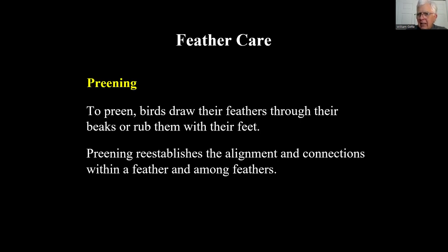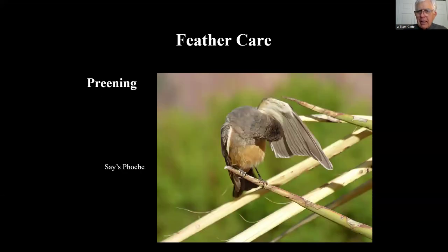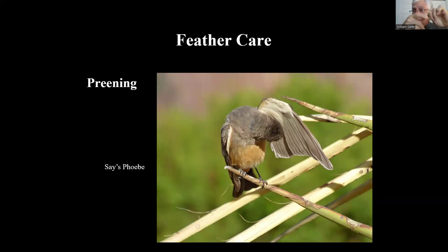Feather care by preening: this great catbird is using its bill to go through its feathers, removing dirt and parasites, and taking off the old sheath of new feathers as they form — like laundering and brushing clothes. Here's a Say's phoebe looking under its wing for parasites, spending a lot of time lifting its wing and preening underneath to align feathers. Remember those hooklets in the feather structure? If they're misaligned, the bird straightens them so feathers are in perfect shape.